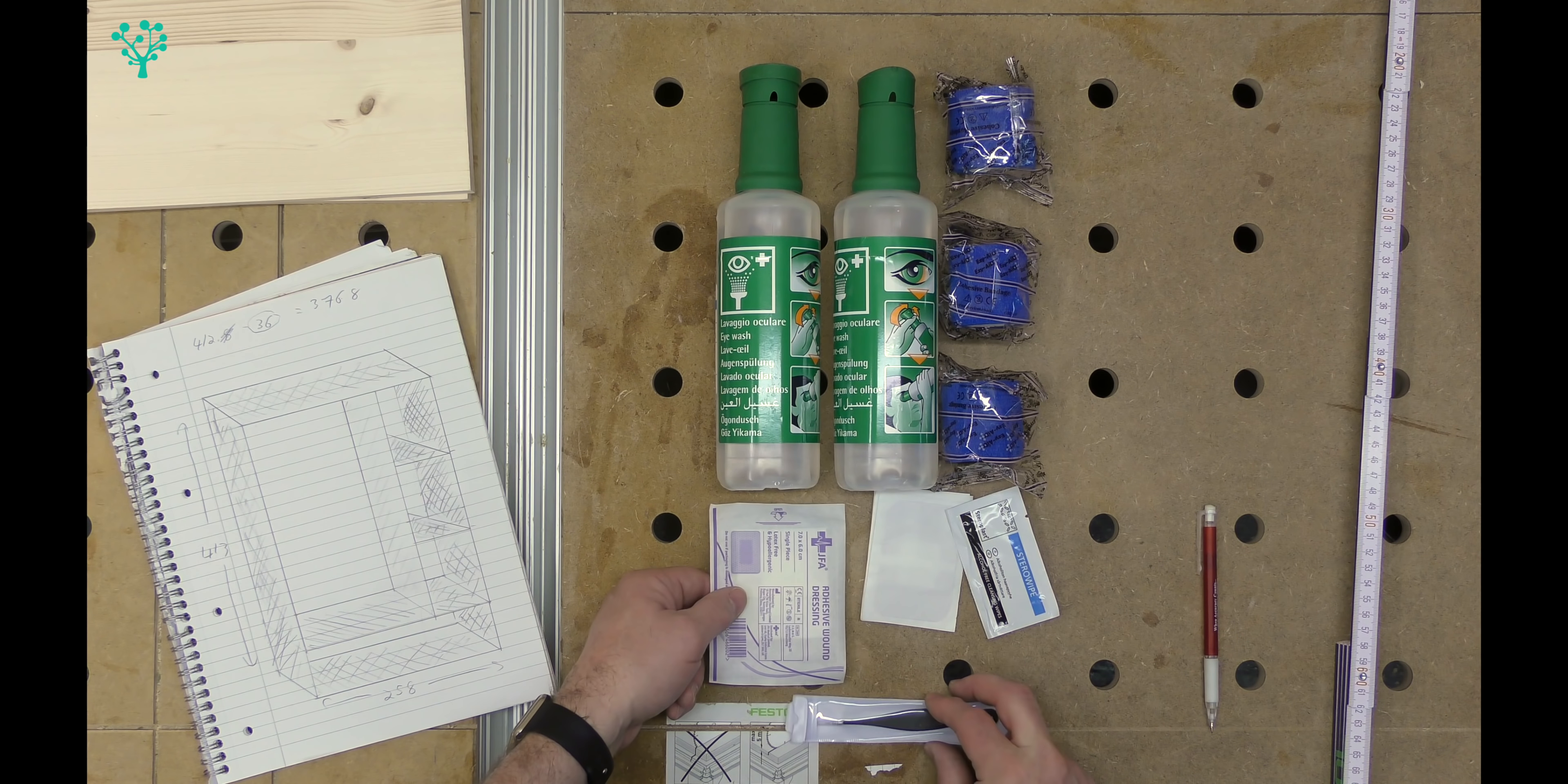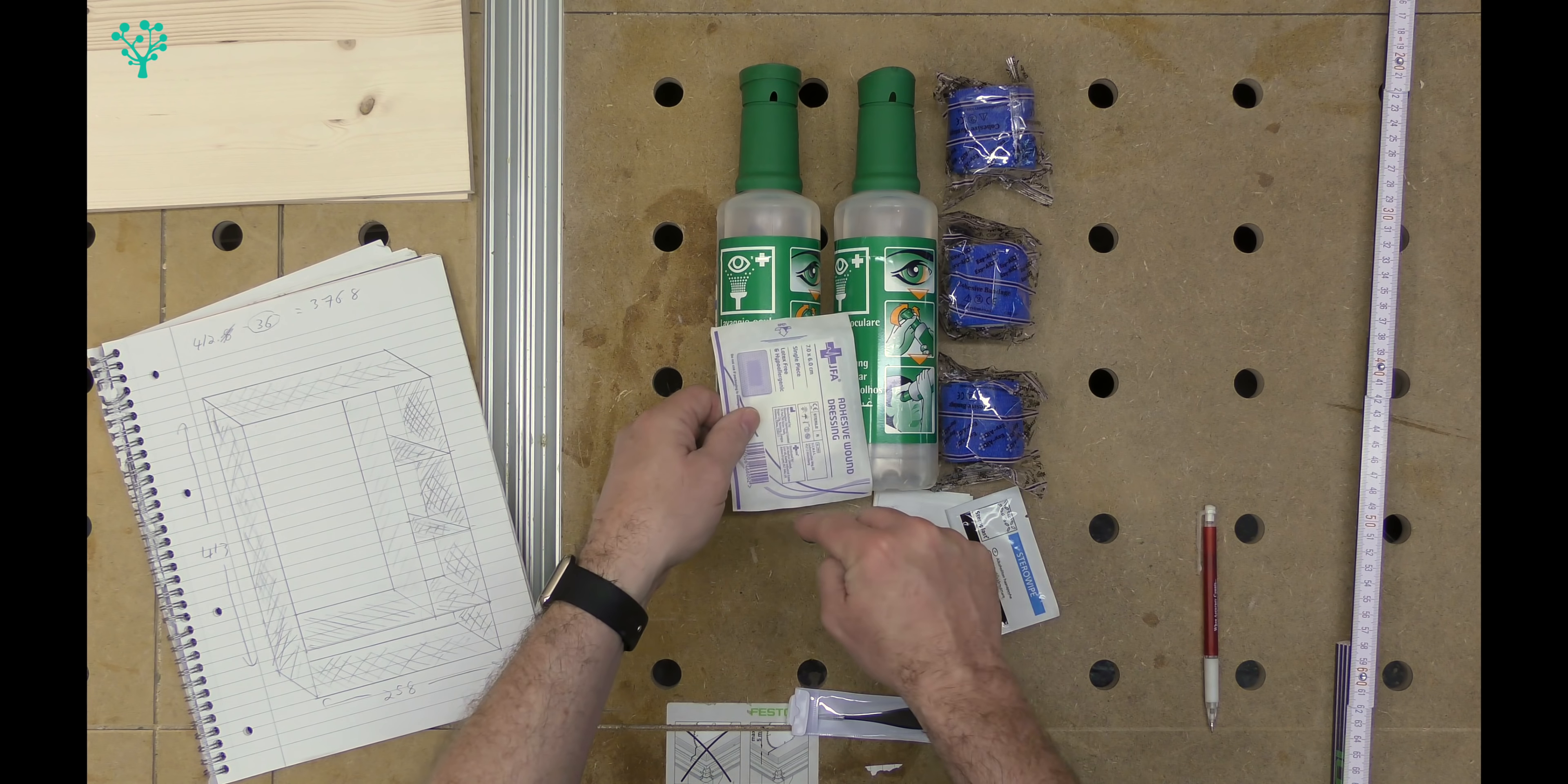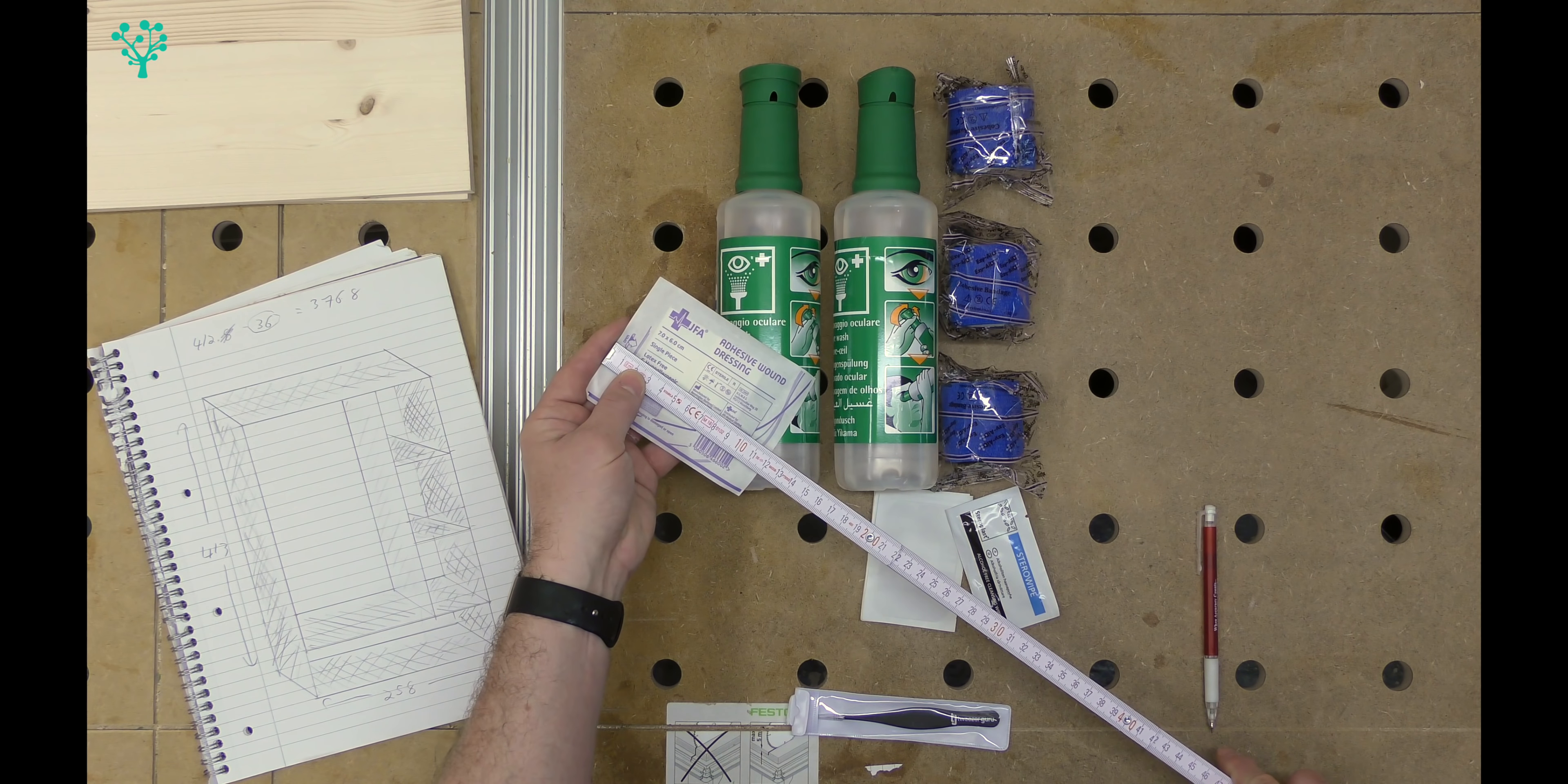Obviously, the box has got to be as deep as the widest thing we want to store. In that case, that's our adhesive wound dressing. This is going to be on its side inside the drawer. So we'll give that 120mm.